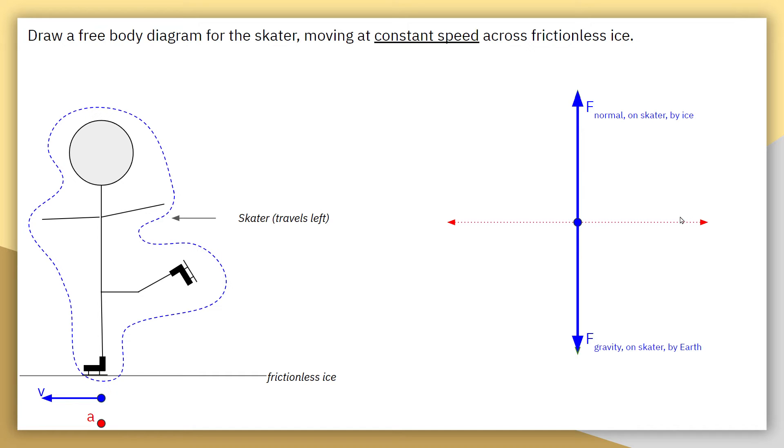We don't have any forces pointing to the right. And then to maintain that balance, we can't have any forces pointing to the left. So while the skater is traveling to the left, that does not mean that they still need to be experiencing a force to the left. So the only forces acting on this skater at this instant in time is the force gravity and the force normal.